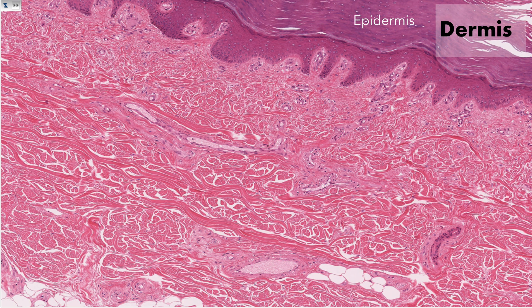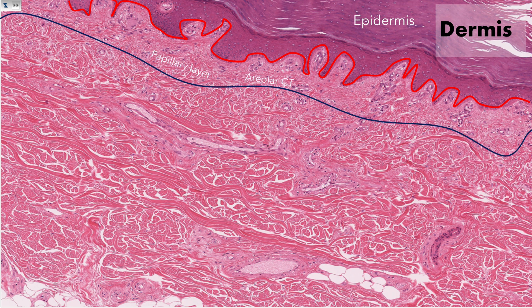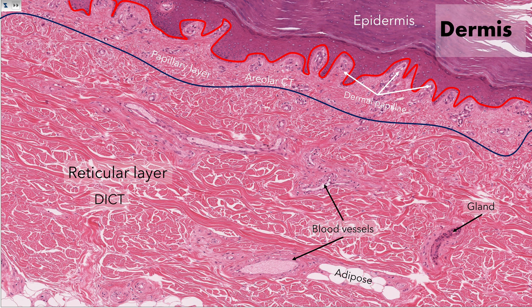The dermis is a much thicker layer located under the epidermis. This line is the stratum basale of the epidermis. The dermis is composed of two layers: the papillary layer and the reticular layer. The papillary layer is composed primarily of areolar connective tissue, while the reticular layer is composed primarily of dense irregular connective tissue. Note that the name is a bit misleading in that it is not composed of reticular connective tissue. The reticular layer is where we find most of the structures of the dermis, like blood vessels, glands, nerves, and islands of adipose tissue.